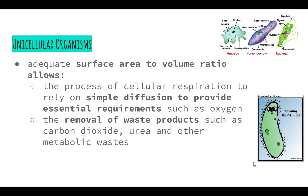Secondly, the removal of waste products such as carbon dioxide, urea and other metabolic wastes is extremely easy. The surface area to volume ratio allows the removal of waste products just as it allows substances to move in. Just as carbon dioxide staying in the blood too long can turn blood acidic, the same applies to unicellular organisms — it can turn their internal environment acidic and stop reactions from taking place efficiently.